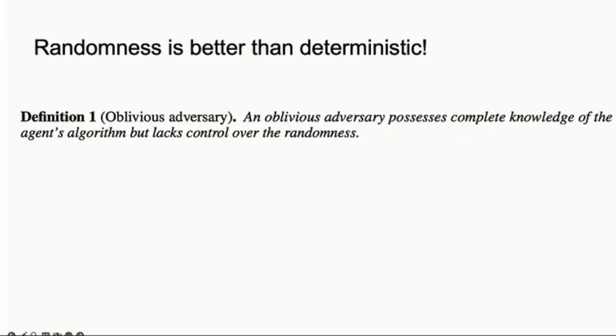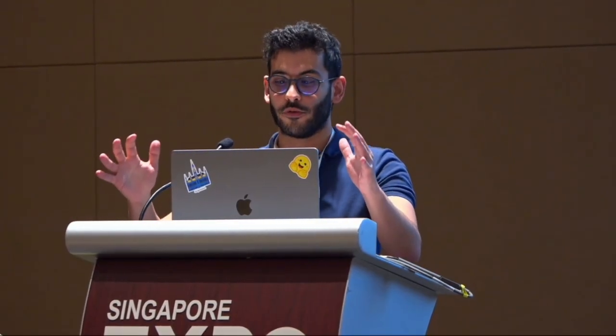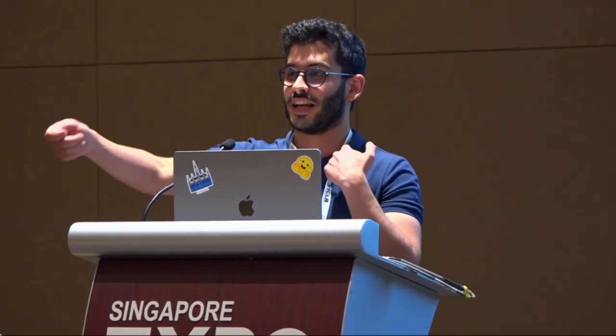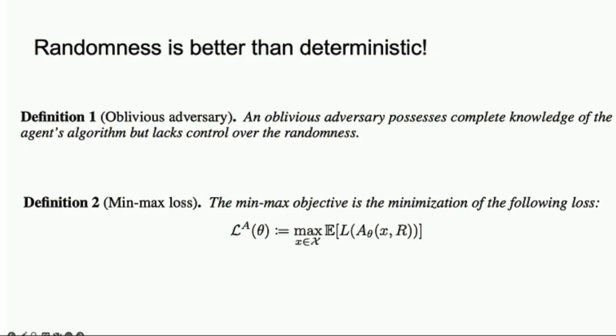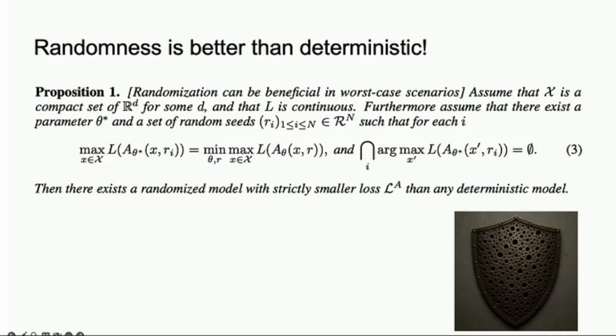We consider an adversarial setting. You have an oblivious adversary that knows your circuitry, knows exactly how you function. It cannot control your randomness but can control your input - it can choose the input in a very adversarial way, the one you're worst on. This is philosophically and mathematically very related to the minimax loss.